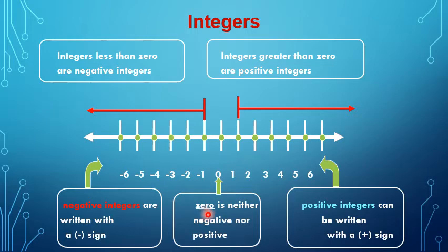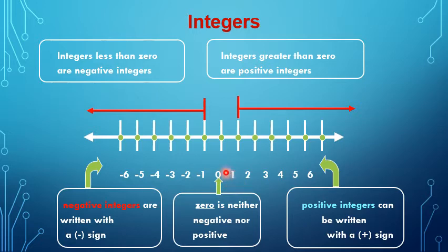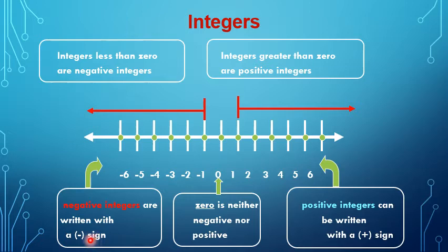Zero is neither negative nor positive — it's a special number. Positive integers can be written with a positive sign, or without a sign, because we consider the positive sign as the default sign. Negative integers are written with a negative sign, which looks like a minus sign. We can say that negative integers are like a mirror image of the positive integers.